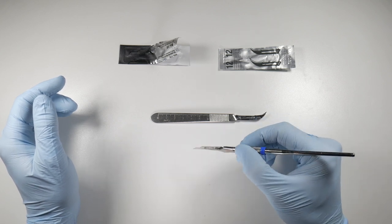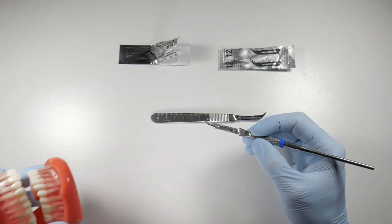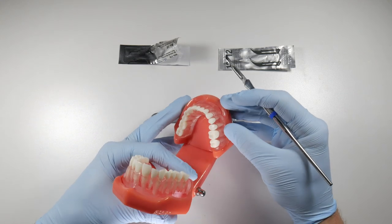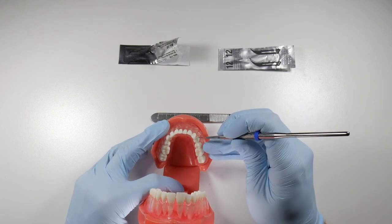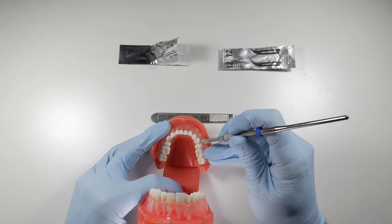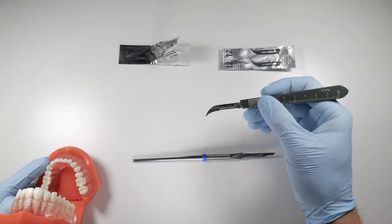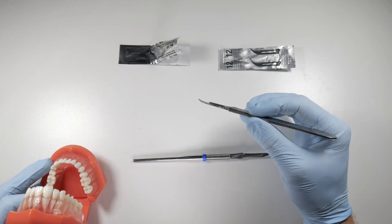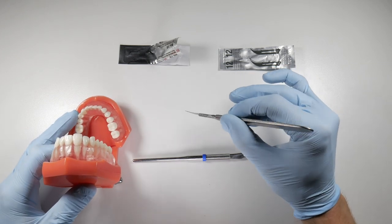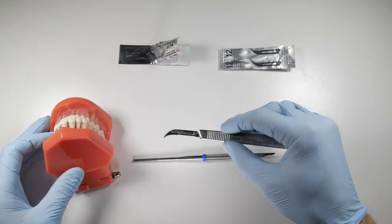The reason I like this is because if we're going to be incising, most times when we're releasing a flap, we're cutting around teeth. We're trying to trace the gingiva of a tooth. Doing that with this is way easier than using this clunky kind of popsicle stick shaped scalpel. Trying to roll this and kind of carve around the teeth, it's just not as natural or as easy as that rounded handle.